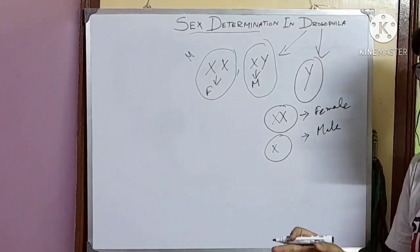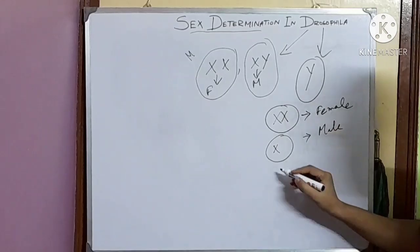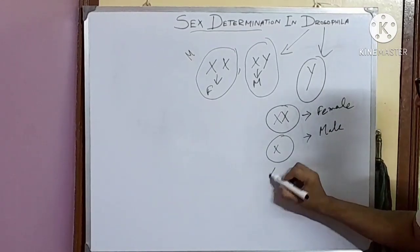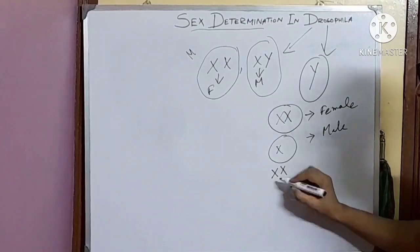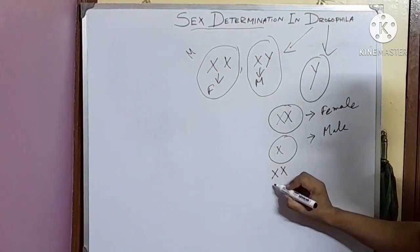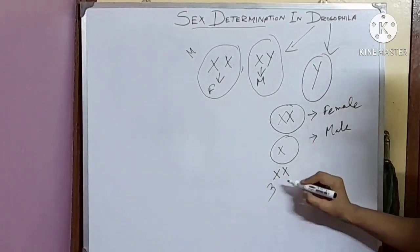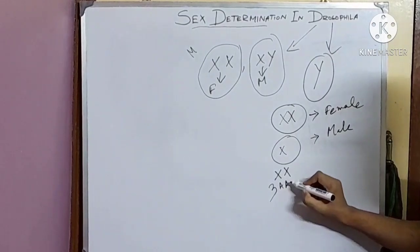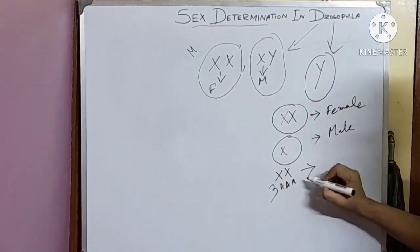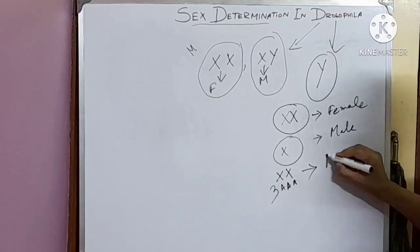Or in case of other types of cases, if two sets of X chromosomes and three sets of autosomes are present, then that fly will be a mosaic.